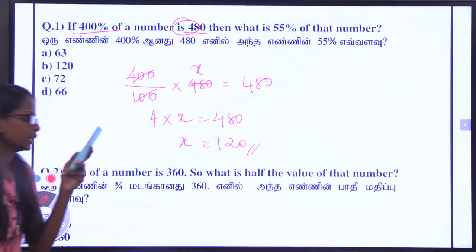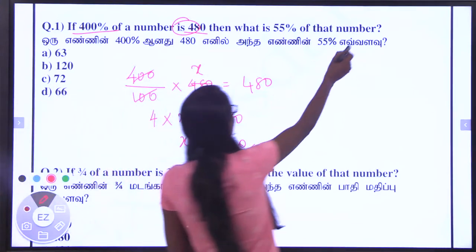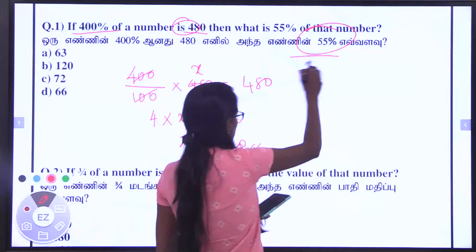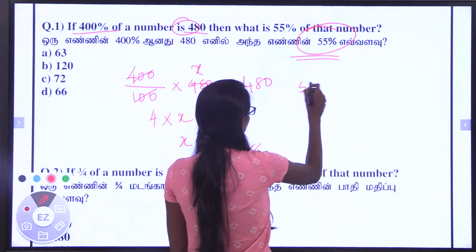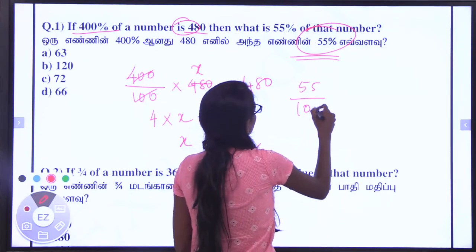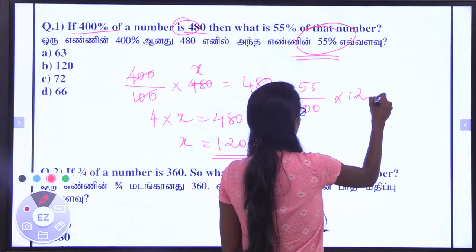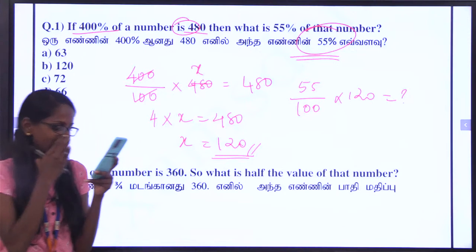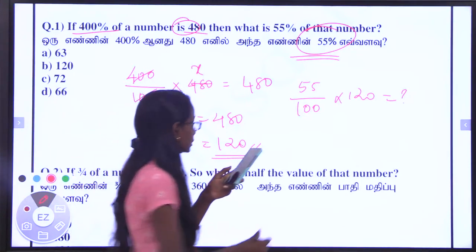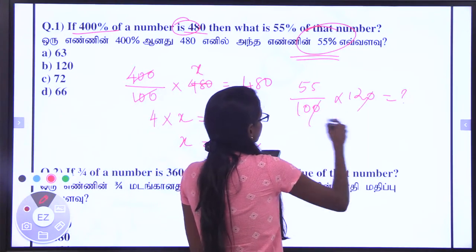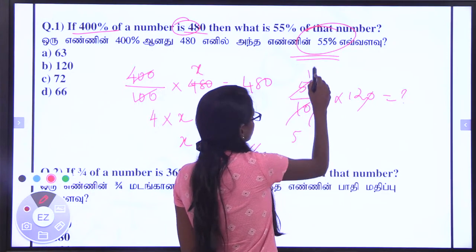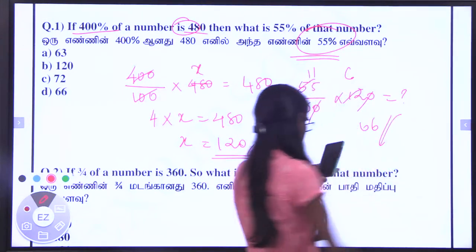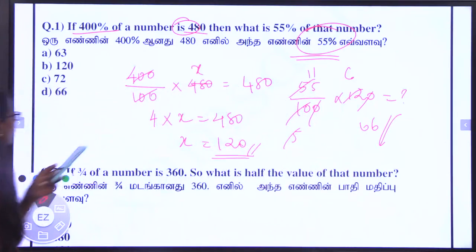Now, 55% of the number — that is 55 divided by 100 into 120 is equal to n, correct? So solve it. The answer is 66.